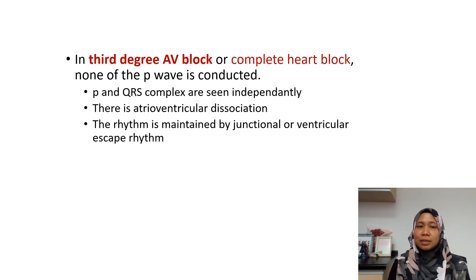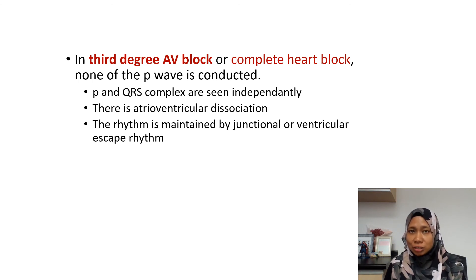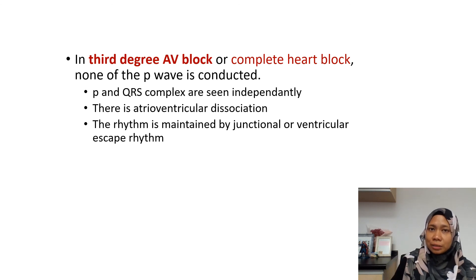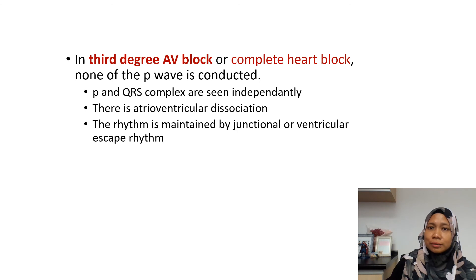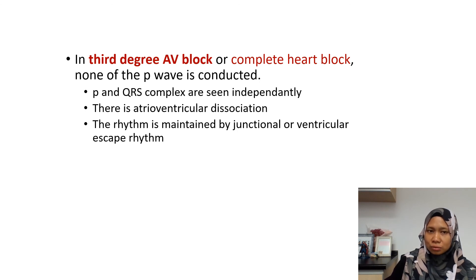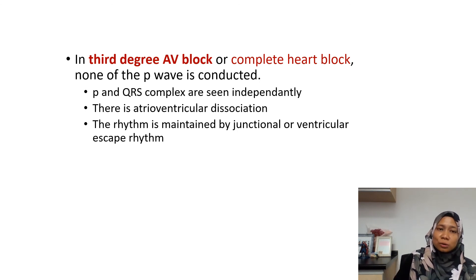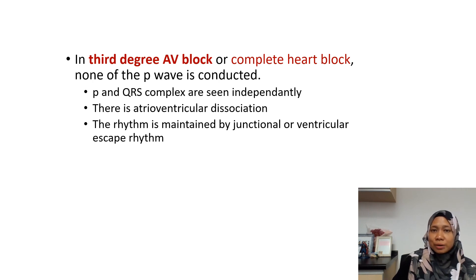The P and QRS complexes are seen independently, following their own pathways — there is atrioventricular dissociation. The rhythm is maintained by junctional or ventricular escape rhythm. If there is no perfusing rhythm, the patient would not survive. With that, I conclude the class on Brady Arrhythmias.